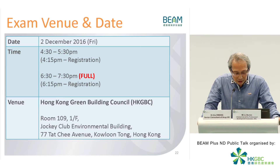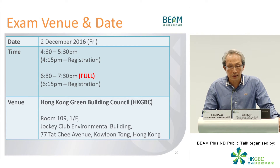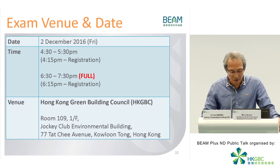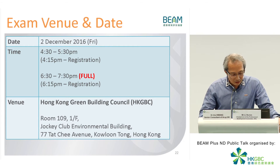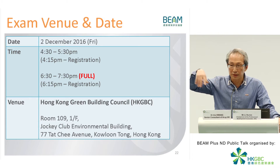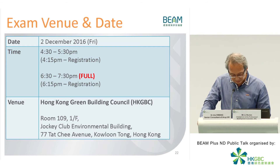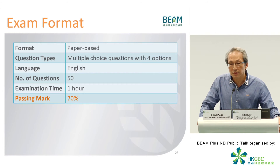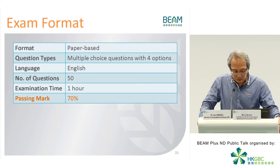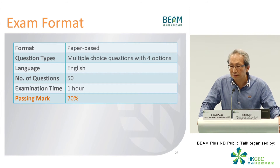The coming exam is December 2nd. If you are already taking the October training, you can apply for the December 2nd examination. There are two time slots — 4:30 and 6:30 — but 6:30 is quite popular and already full, so you can only take the 4:30 session. The venue is the Green Building Council in the Jockey Club Environmental Building. The exam will be paper-based, multiple choice with four options, in English, 50 questions, one hour, and you need 70% correct — meaning 35 questions must be correct. The test tests your understanding of the assessment system and Beam Plus ND. It is open book — you will be given the Beam Plus ND manual at the exam, a clean copy with no marks.